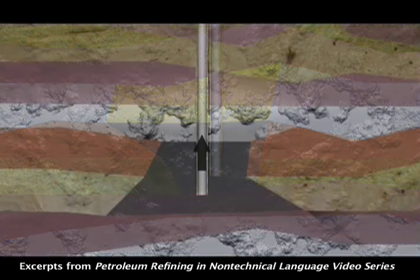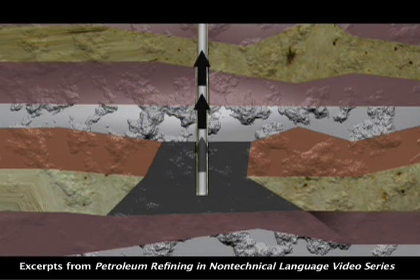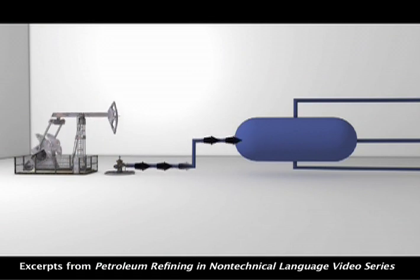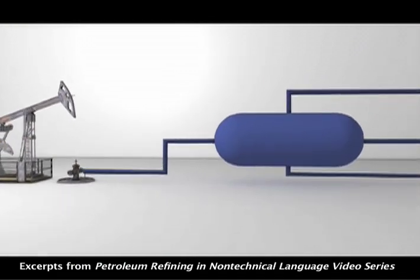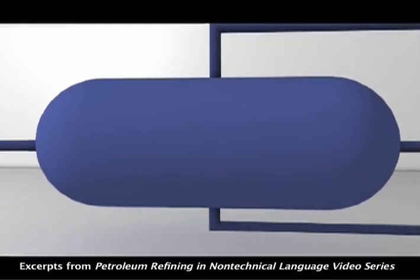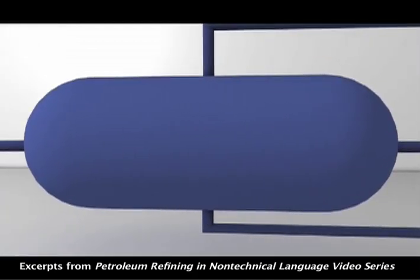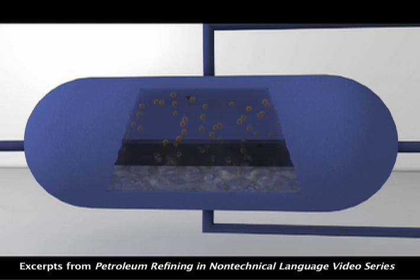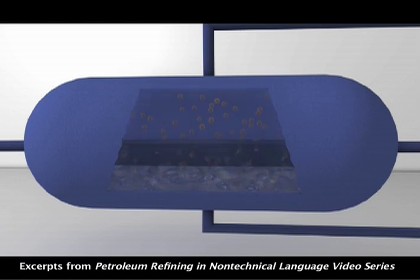As an oil stream comes up out of the reservoir and through the well head, the pressure drops. The oil and previously dissolved gas mixture goes into a vessel right at the well site called a field separator. As the gas and liquid enter the larger space, the beer bottle effect occurs — the pressure drops further and the light gases that were dissolved in the crude oil vaporize and bubble out, just like the fizz in a beer when you pop the top.